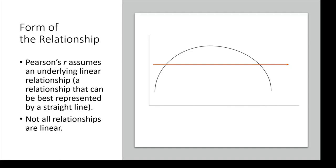This would be a case where Pearson's r is not the appropriate test to run. However, for us, if we look at our data and it seems like the points follow a straight line, then Pearson's r is going to work perfectly.